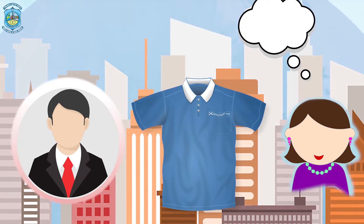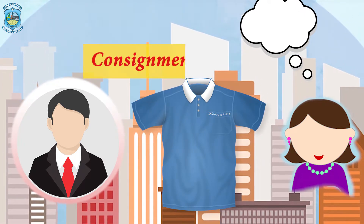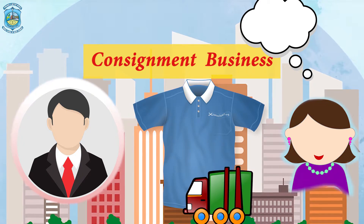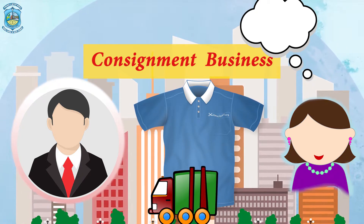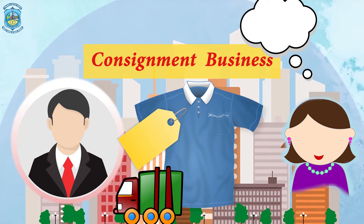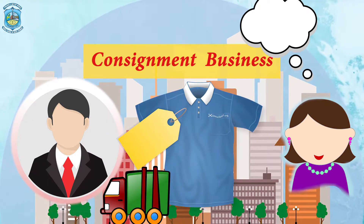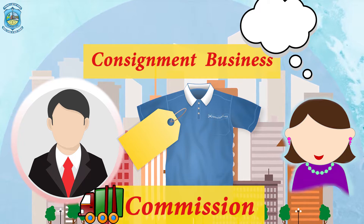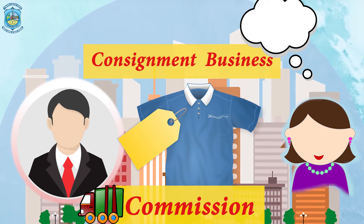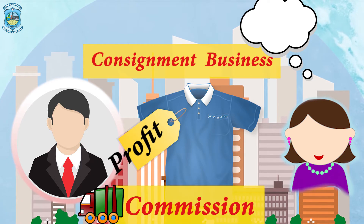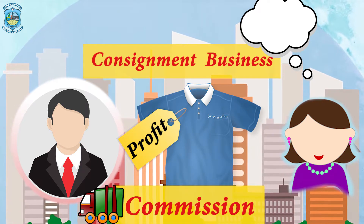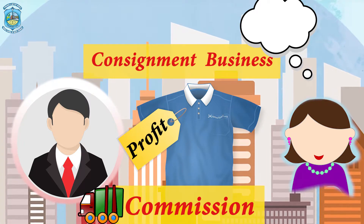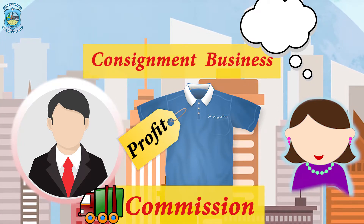Her friend was convinced with this novel idea and agreed to keep the new men's shirts in his own showroom, since he was already looking for a new range of products. They went into a consignment business where the boutique owner would send goods on consignment to the consignee — her friend in another city — who would sell all the products, remit the sale proceeds, and charge a commission based on those sale proceeds. They started this new business and it went very well, earning huge profits, with the consignee also earning a large commission.